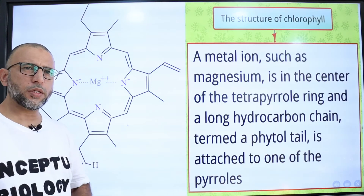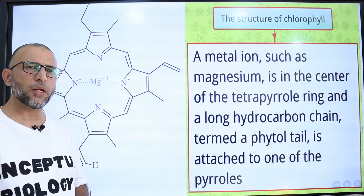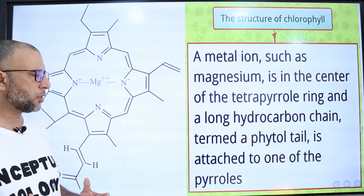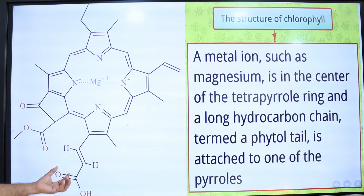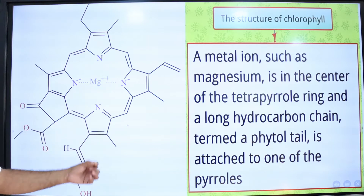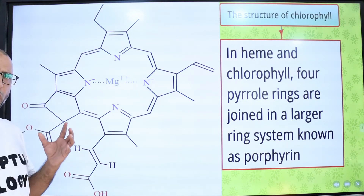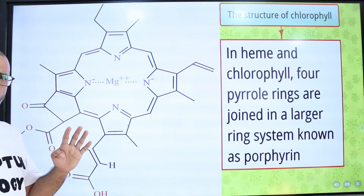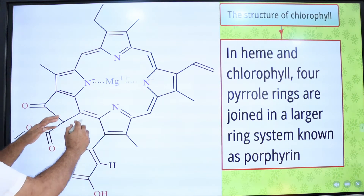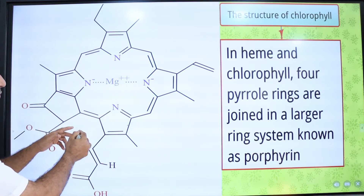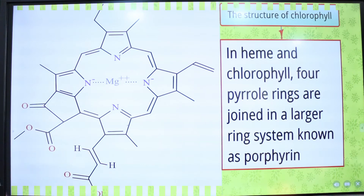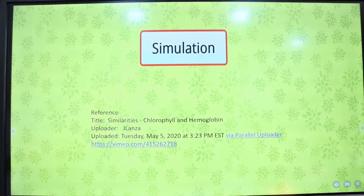A metal ion such as magnesium is at the center of the tetrapyrrole ring, and a long hydrocarbon chain called the phytol tail is attached to one of the pyrroles. In both hemoglobin and chlorophyll, four pyrrole rings are joined together in a larger ring system known as a porphyrin.